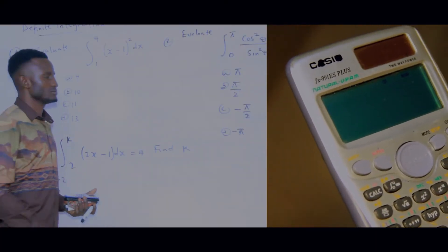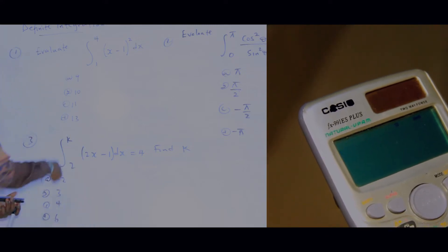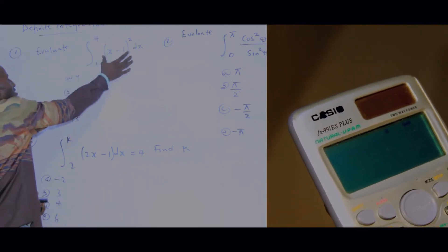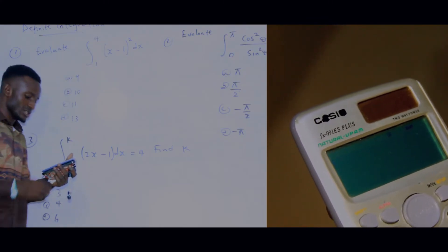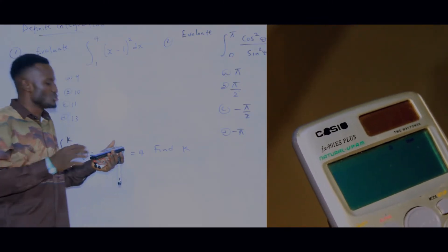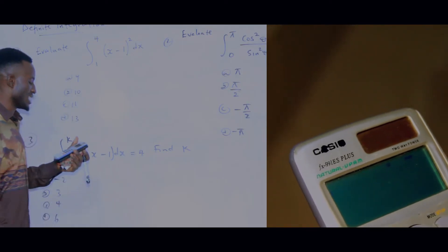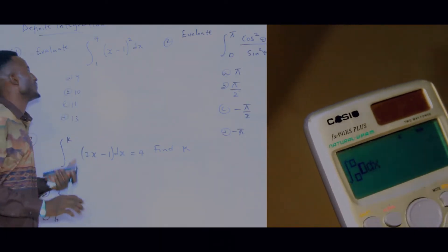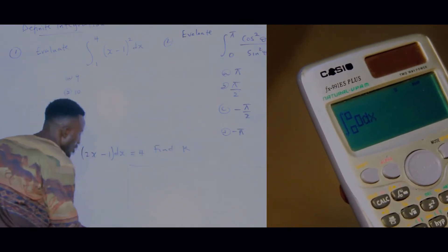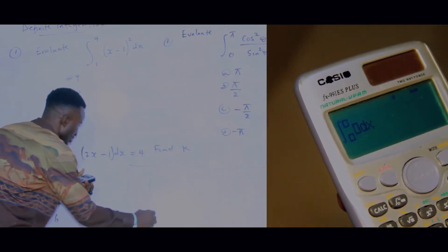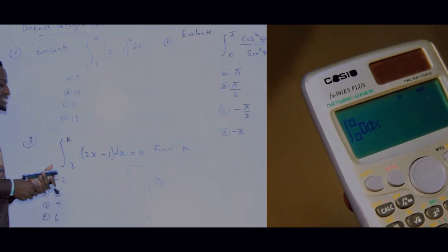Now let me show you how to do definite integration on the calculator. The first question says: evaluate the integration with upper limit four and lower limit one. You simply press the button for integration — that is the button on Alpha. When you press that Alpha button, it will give you the integration template.